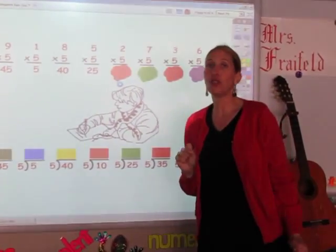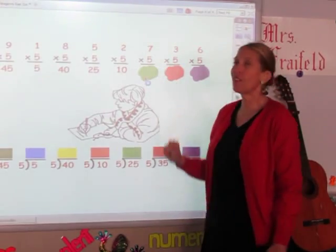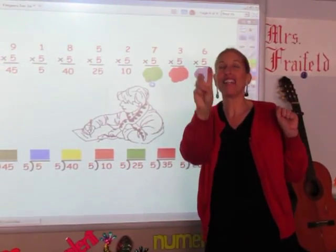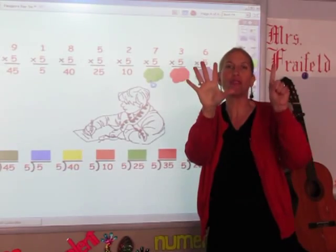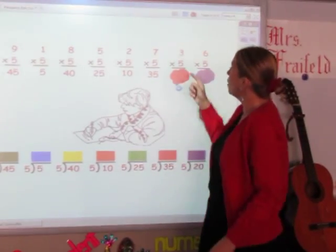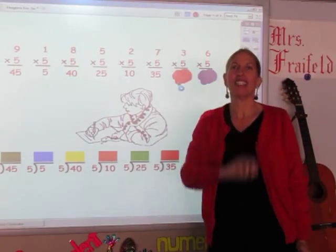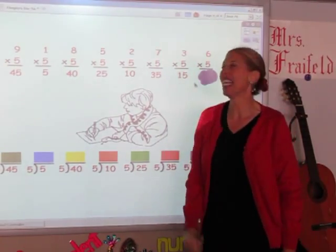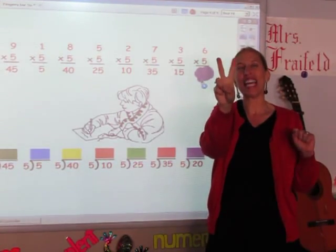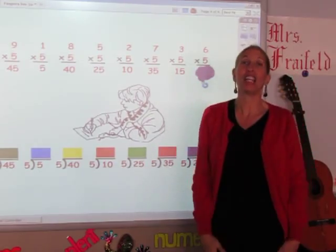I'm going to say the fives for two fingers: 5, 10. The answer is 10. I'm going to say the fives for seven fingers: 5, 10, 15, 20, 25, 30, 35. The answer is 35. I'm going to say the fives for three fingers: 5, 10, 15. The answer is 15. I'm going to say the fives for six fingers: 5, 10, 15, 20, 25, 30. The answer is 30.